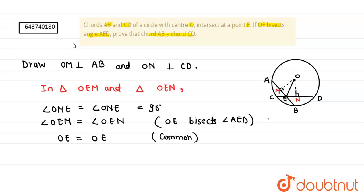So triangle OEM is congruent to triangle OEN by AAS congruency.